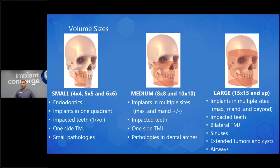Of course, if you're doing airway or TMJ, do the large volume. For endo, try to keep to the small. For the general dentist doing normal practice, my magic number is really 8 by 8 or 10 by 10 — that's the best. Even a large male with maybe an impacted third molar, you're going to catch everything in an 8 by 8 or 10 by 10.